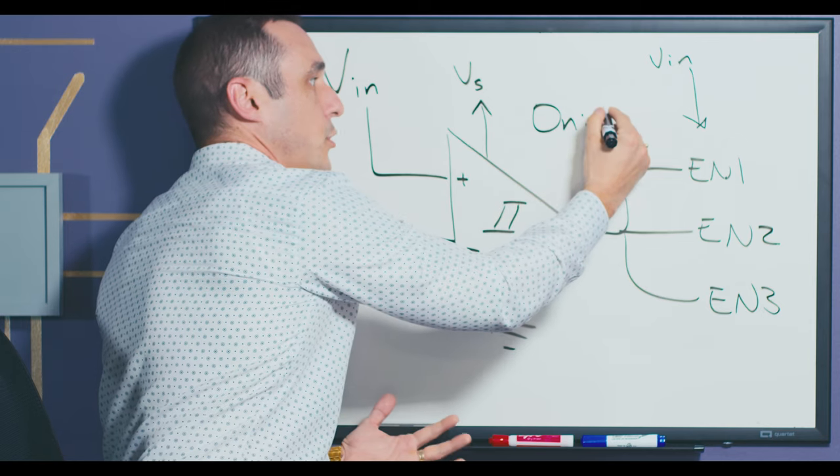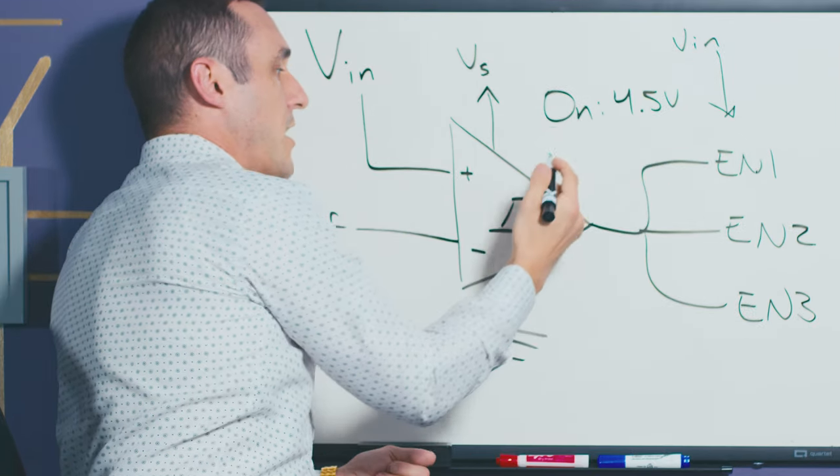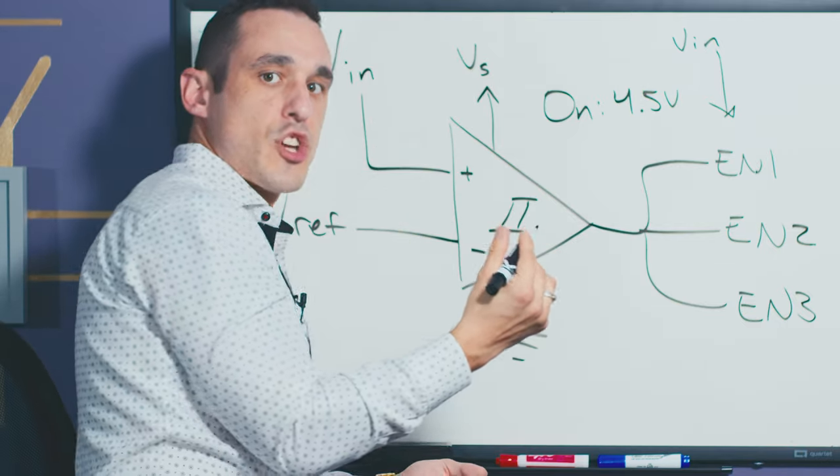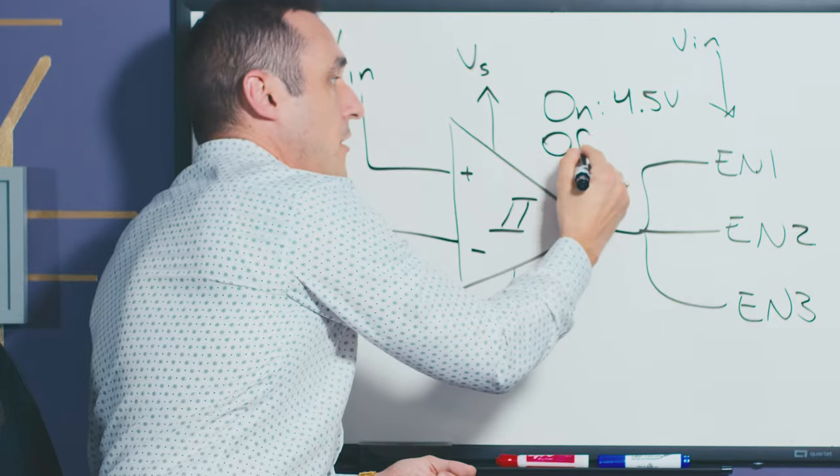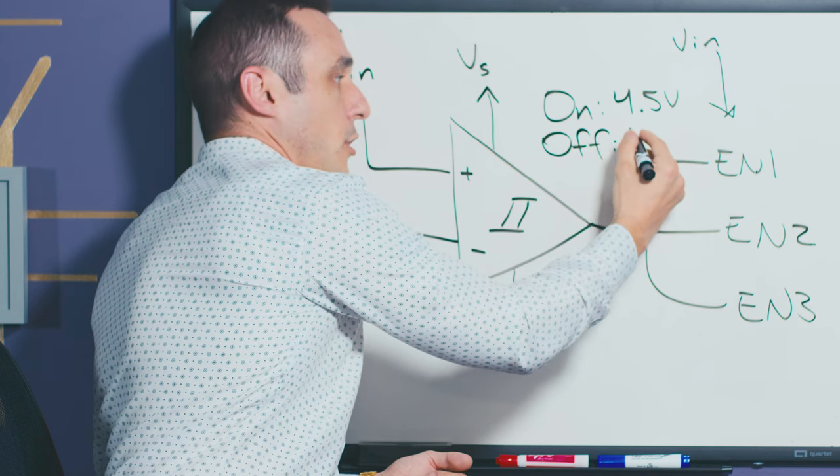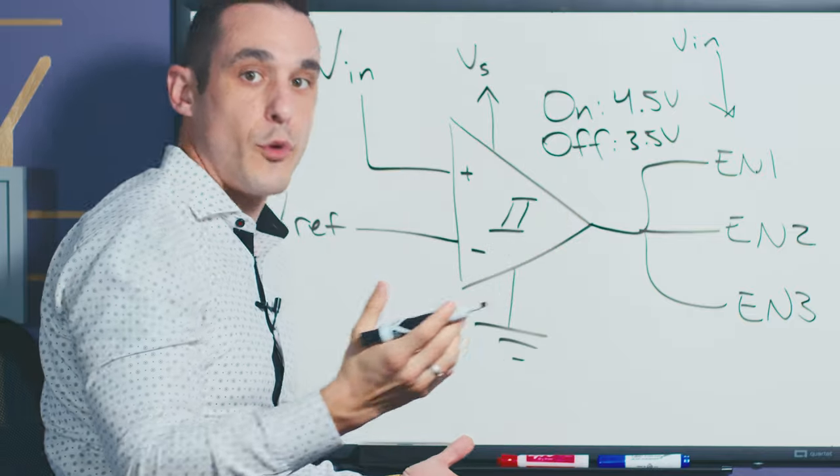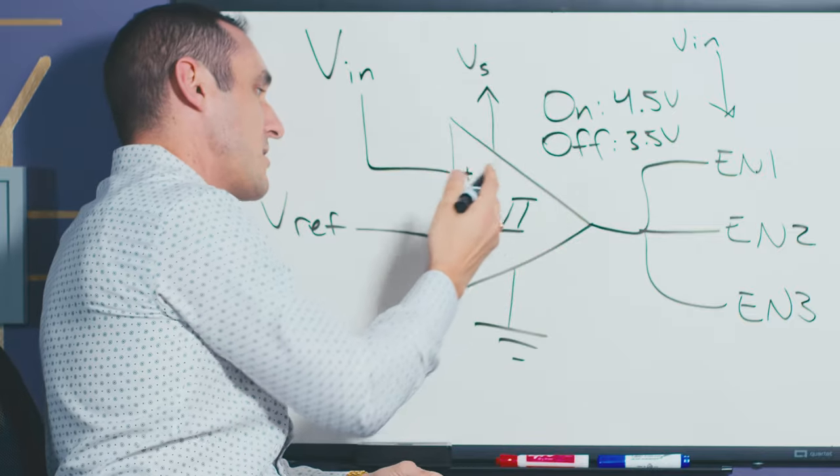With hysteresis in this comparator what it's going to do is it's probably going to toggle on at for example some higher voltage let's say 4.5 volts. But in the falling edge when Vin is dropping and then the system is shutting down we could have our off threshold be a bit lower let's say 3.5 volts. So we could have let's say one volt of hysteresis in this comparator.